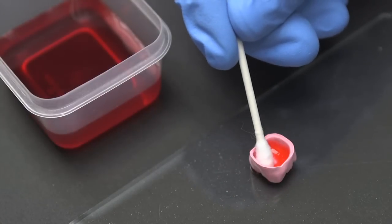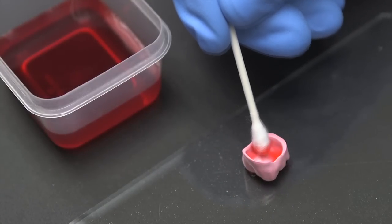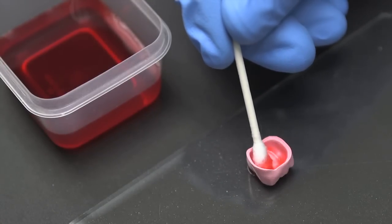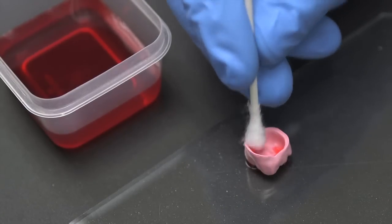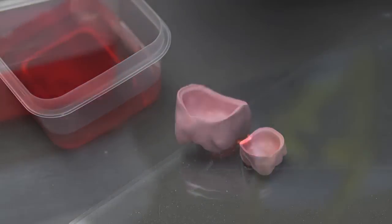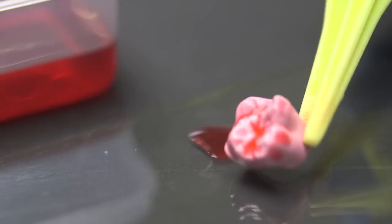At this point, the excess Denton shading liquid needs to be removed. Using a cotton swab, carefully blot the crown until all excess liquid has been removed. Flip the crown and do the same on the occlusal surface.